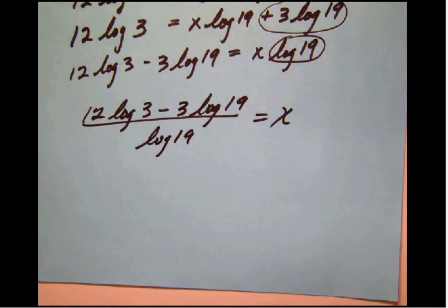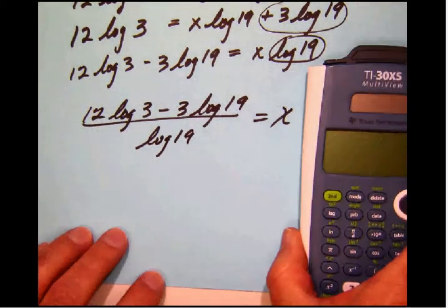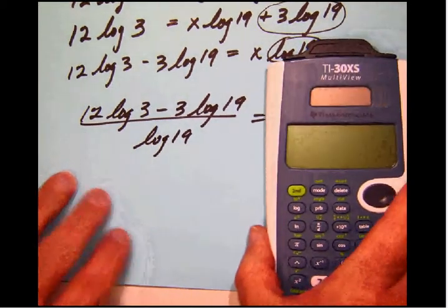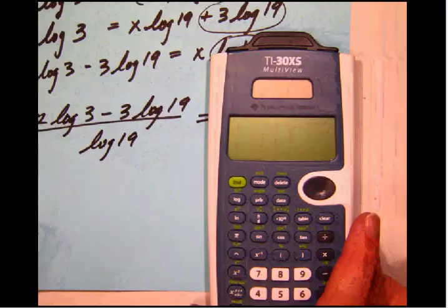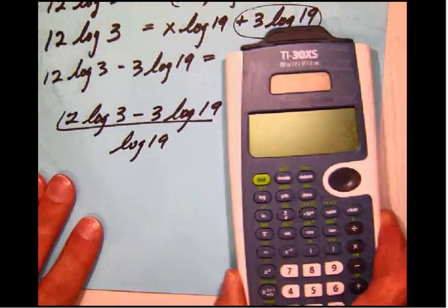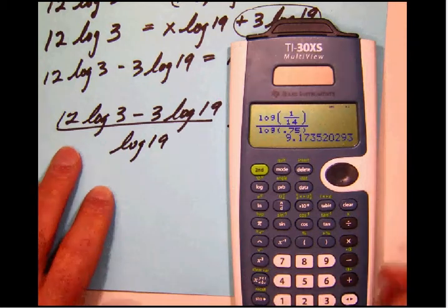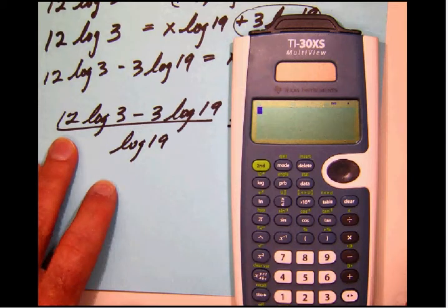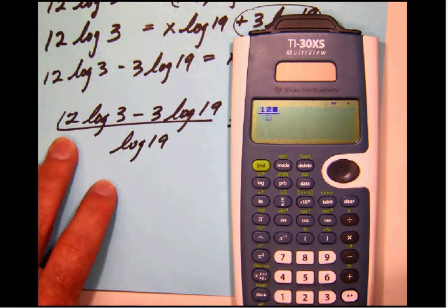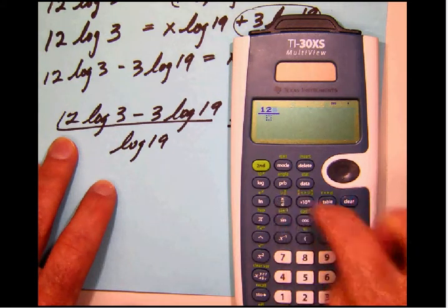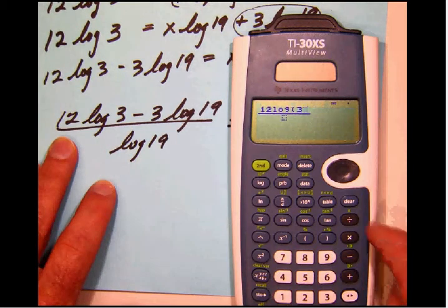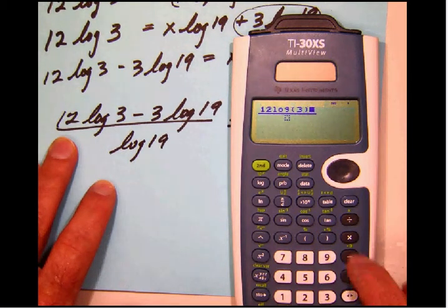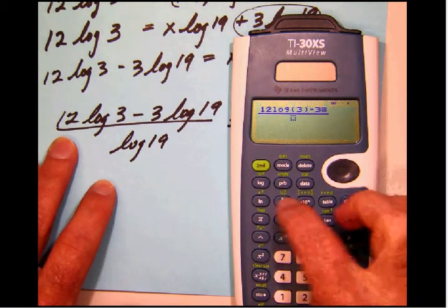We need to use a calculator for that, of course. You can use the calculator that's in ALEKS, but I think in this case it would probably be just as convenient to use my TI-30XS, maybe more so. So let's go ahead and do that. We'll turn the calculator on. And once again, I like this calculator because you merely make the calculator display look exactly like what we have here on paper. So 12 log 3 minus 3 log 19.